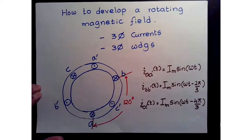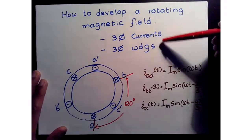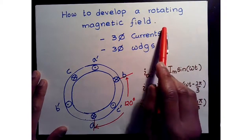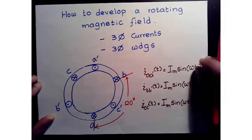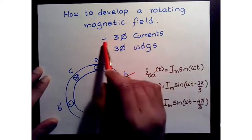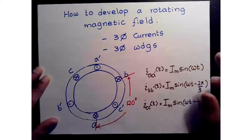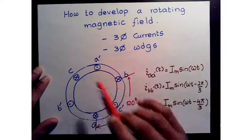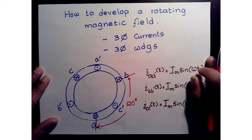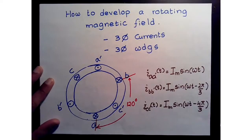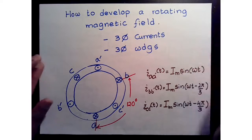To establish our rotating magnetic field we need two things: a set of three-phase currents — typically balanced, or we at least try to get them as balanced as possible — and then a three-phase set of windings. We talked about different winding patterns, concentrated versus sinusoidal windings. In this discussion we will focus on concentrated windings as we learn the fundamentals. At a graduate level you can substitute the sinusoidal function in place of concentrated windings.